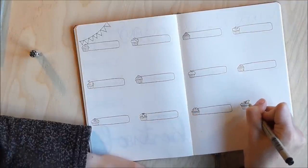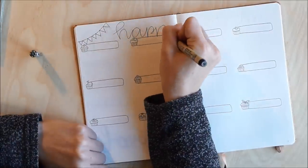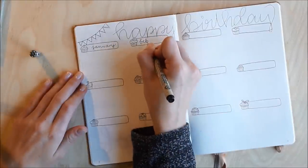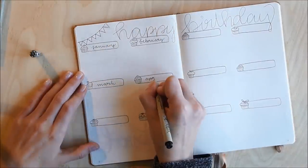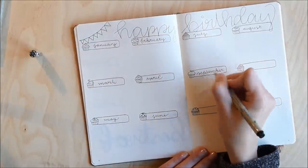I wrote happy birthday on top and then I'm basically going to list down all the birthdays that I have in this month. And later on I filled it with color and made it a bit more fun.